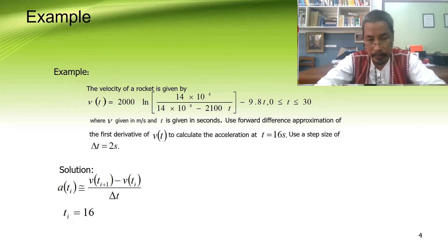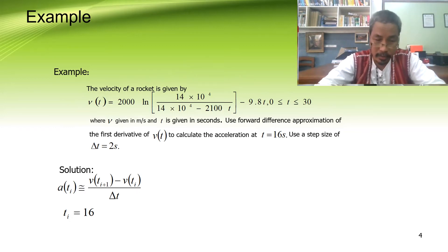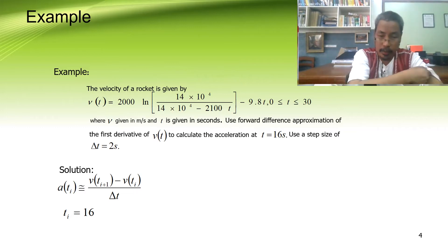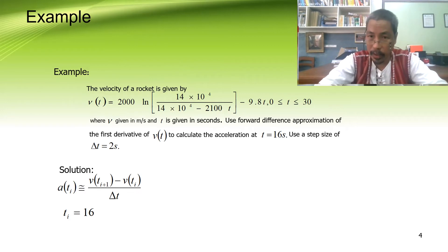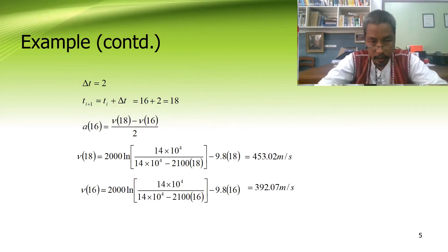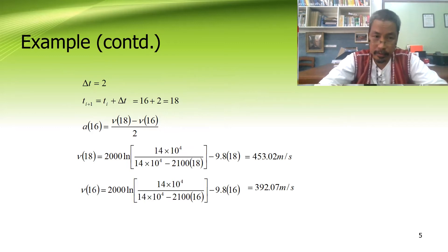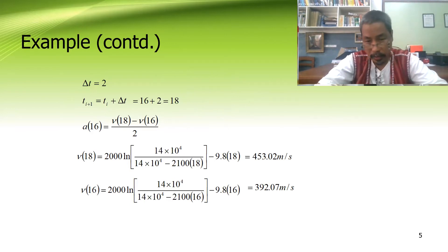If you take the derivative of the velocity function, that gives acceleration — it is also a function of time. Our important point is t = 16 seconds, because that is where our question asks us to calculate the acceleration. Therefore, delta t = 2 and t + delta t = 18, so the relevant points are 16 seconds and 18 seconds. We need to evaluate velocity at t = 18 and velocity at t = 16.